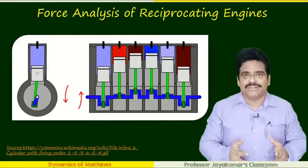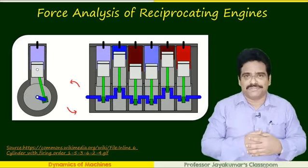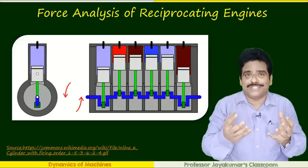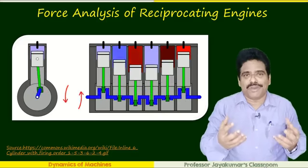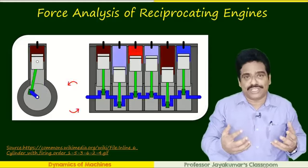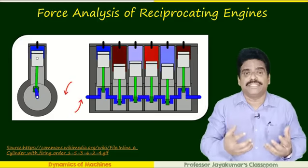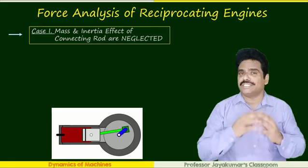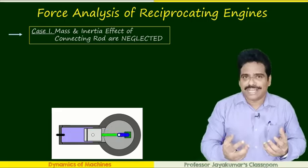We know that various forces are acting in a reciprocating engine. The two predominant moving parts are the piston and the connecting rod. When both have mass and acceleration, they will produce inertia force and inertia torque. We will be considering everything in our dynamic force analysis study, which can be done under two cases for simplicity.